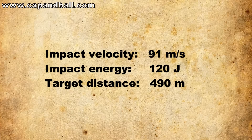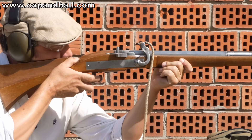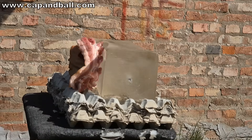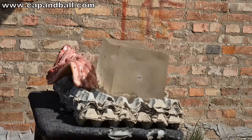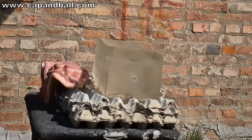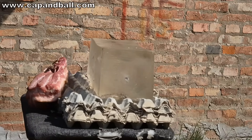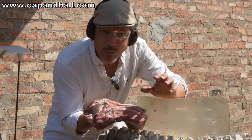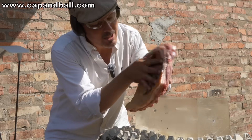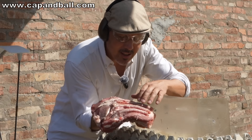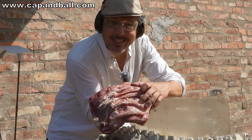Next velocity is 91 meters per second — that is 120 joules of kinetic energy, corresponding to 490 meters target range. At 91 meters per second, the bullet did not penetrate the gelatin block, but it did penetrate the skin. Here is the point of impact, and the bullet is embedded in the meat.